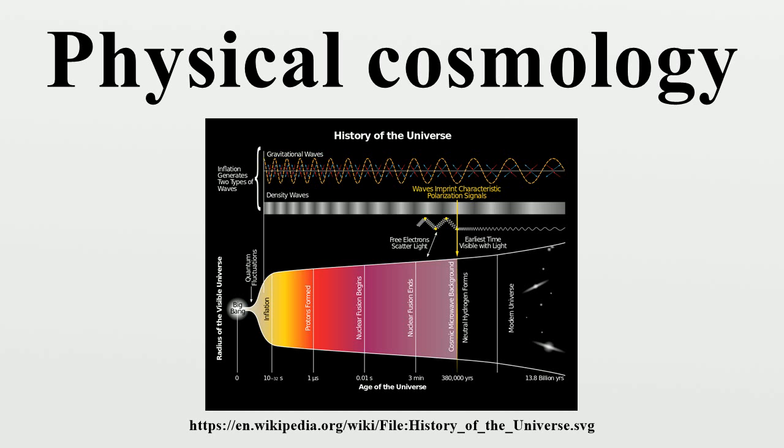In 1927, the Belgian Roman Catholic priest Georges Lemaître independently derived the Friedmann-Lemaître-Robertson-Walker equations and proposed, on the basis of the recession of spiral nebulae, that the universe began with the explosion of a primeval atom, which was later called the Big Bang.